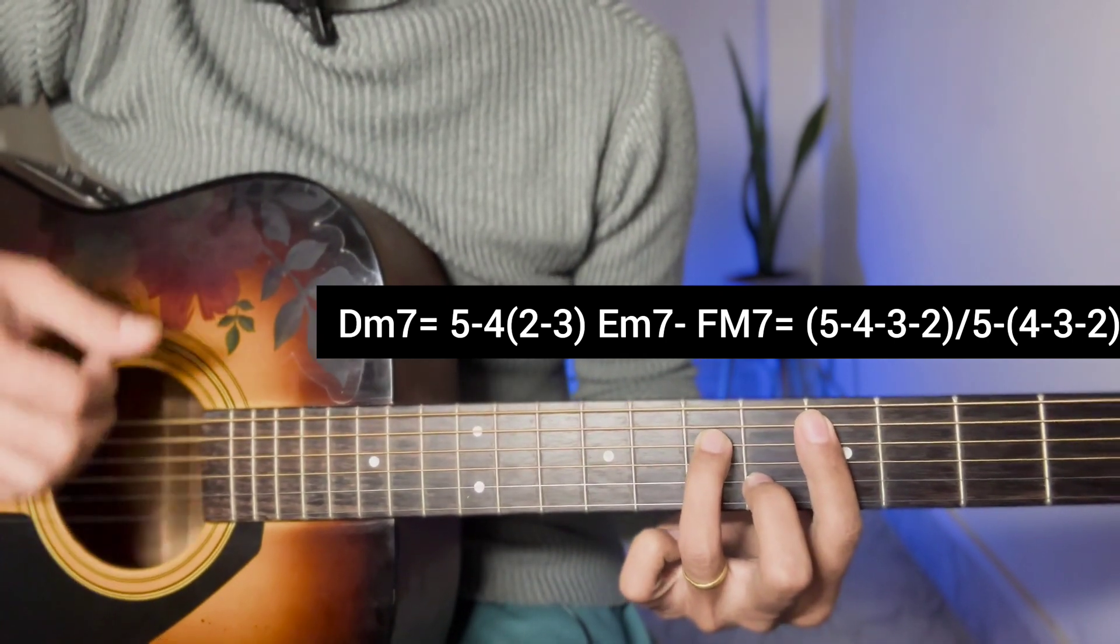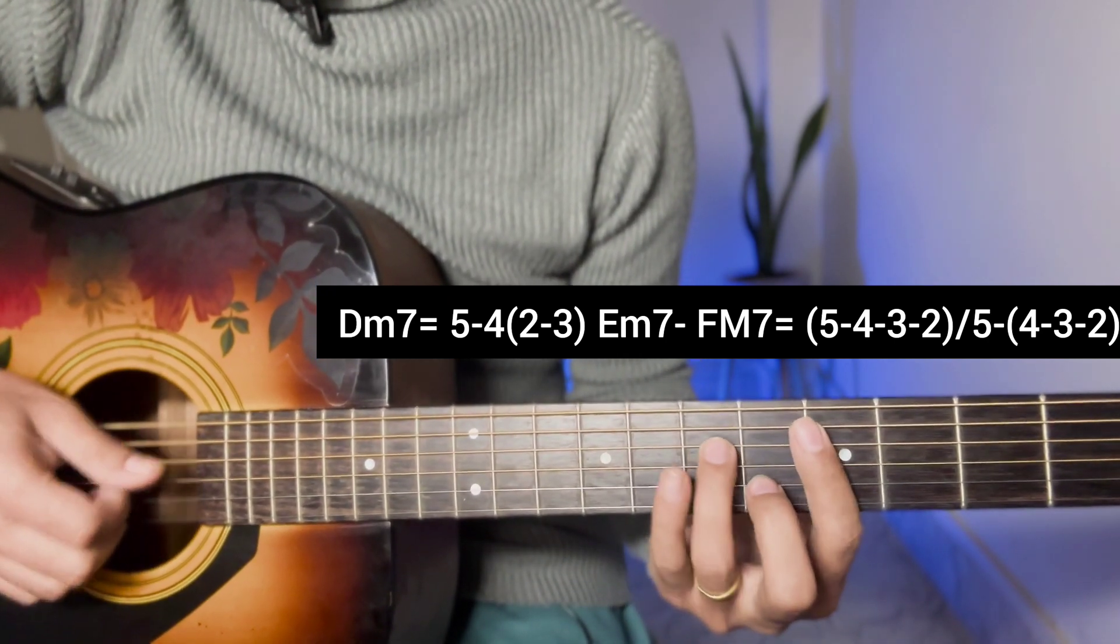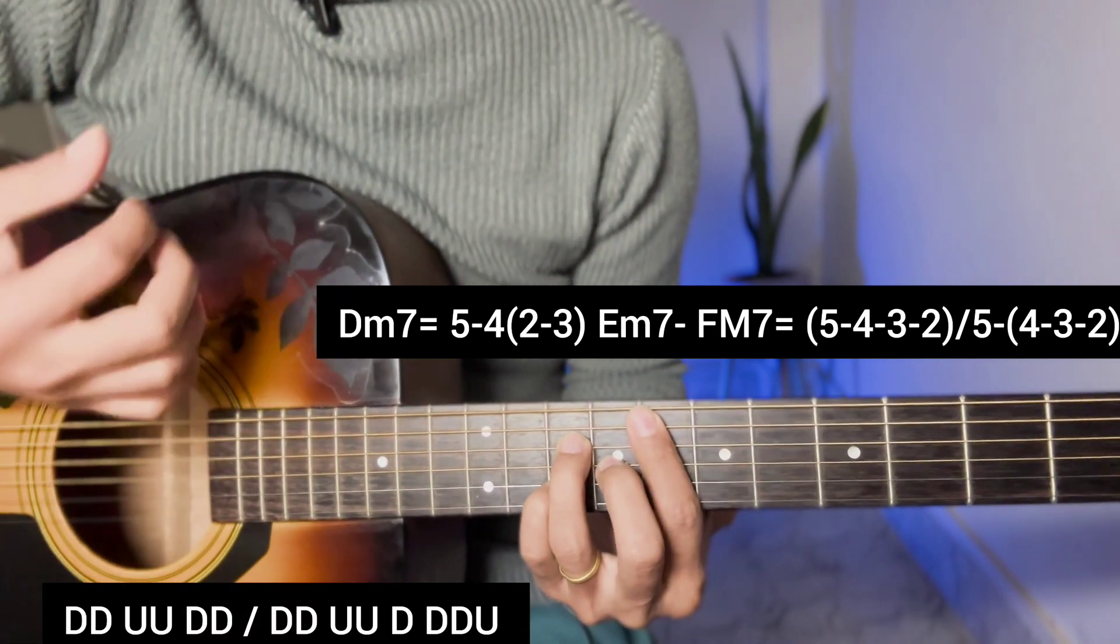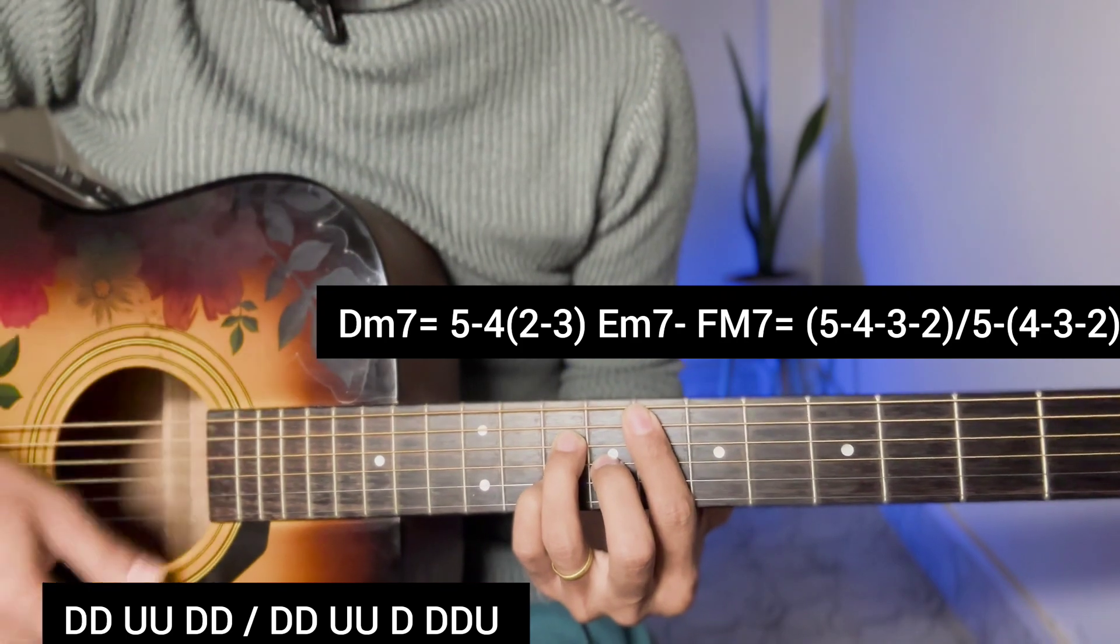So this is the chorus, and now the strumming pattern. You are strumming down, down, up, up, down, down, down, down, down, up, up, down, down, down, up.